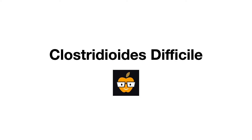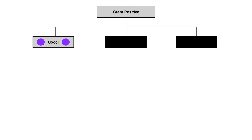In this video, we will talk about Clostridioides difficile. I know what you guys are thinking - finally, we made it through all of the different cocci. And you're absolutely correct. So if you're going in order, the last video was the final video about the cocci species. And now we're going to start to talk about another gram positive species and all of the different bacilli.